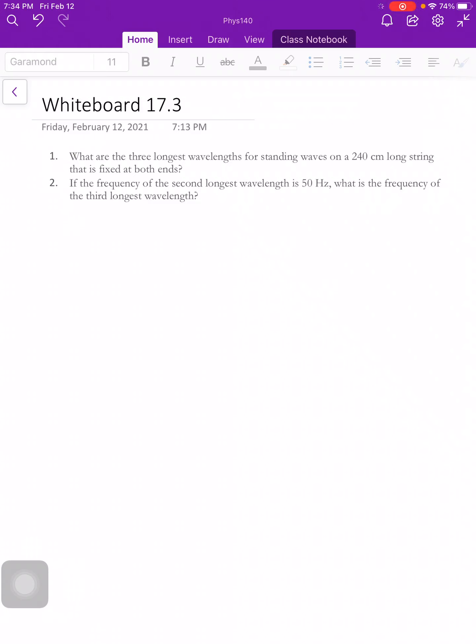The problem says: What are the three longest wavelengths for standing waves on a 240 centimeter long string that is fixed at both ends? That's part one. And then part two is: If the frequency of the second longest wavelength is 50 Hertz, what is the frequency of the third longest wavelength?